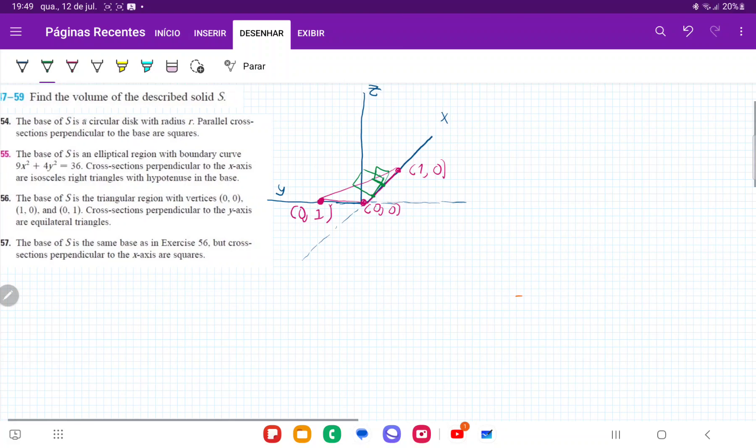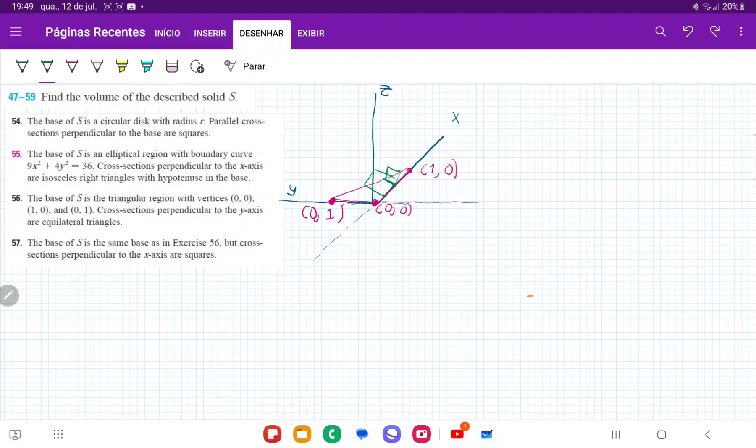We're going to have these squares here, and as we go along, they're going to be like this. Basically we're adding up all these squares to make a volume. This integral is going to be the sum from 0 all the way out to 1 on the x-axis. So we're integrating from 0 to 1, A(x)dx, because we're summing up these squares across the x-axis.